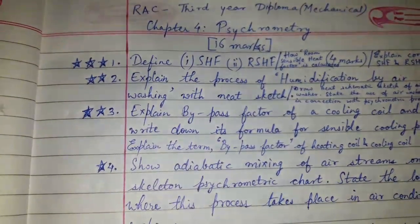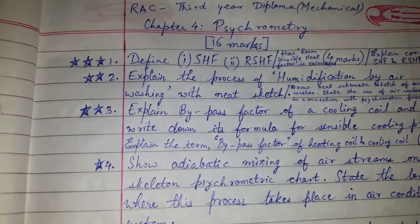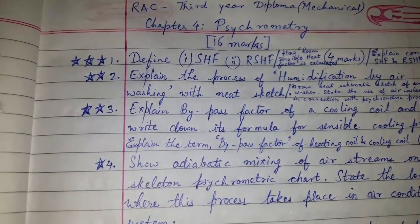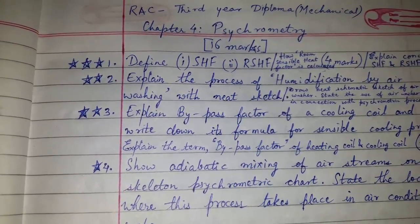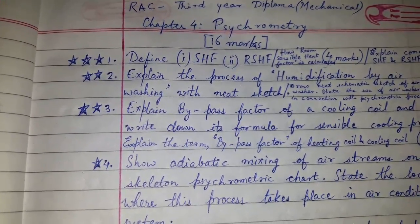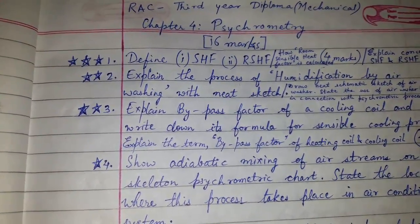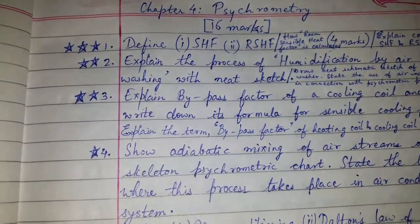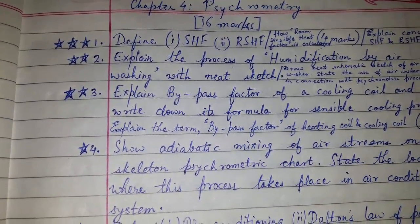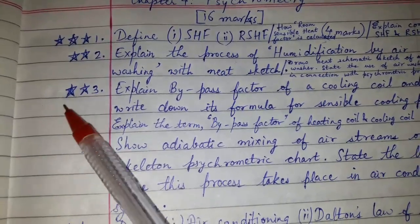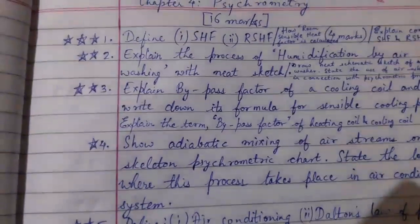Hi friends, today's topic of discussion is the question bank for the subject RAC, for third-year diploma mechanical, Chapter 4: Psychrometry. This chapter is for 16 marks. The questions which have more stars are more important, but as such all the questions are important.